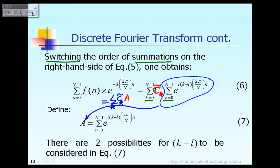How do we calculate the value of A? That depends very much on the value of k minus L. Remember, k is an integer number and L is also an integer number. So there are actually only two possibilities that you can have for the value of k minus L: it could be a multiple of capital N, or not a multiple of capital N. That's the only two possibilities you have.